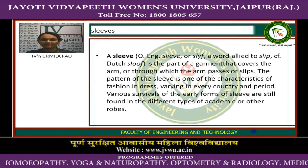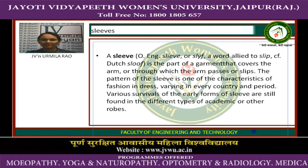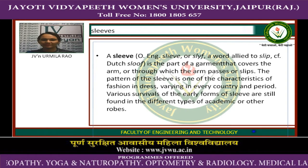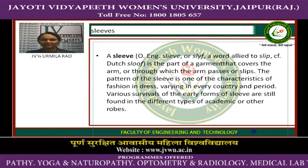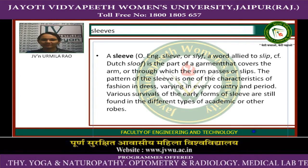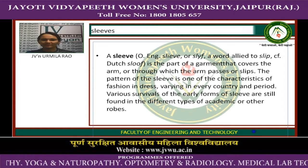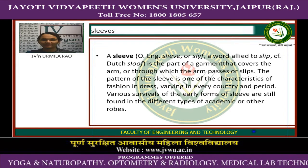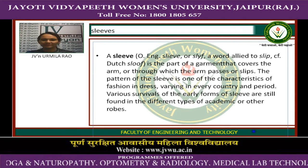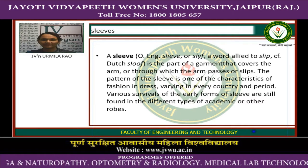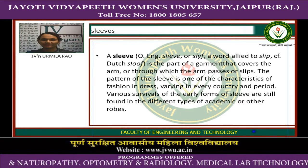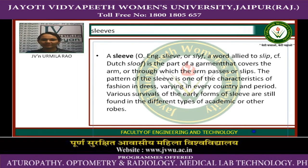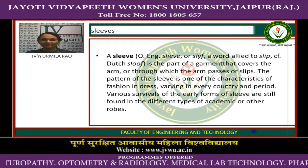Sleeve — a word with a long history. A sleeve is the part of a garment that covers the arm and through which the arm passes or slips. The pattern of the sleeve is one of the characteristics of fashion in dress, varying in every country and period. Various survivals of the early form of sleeve are still found in different types of academic or other groups.